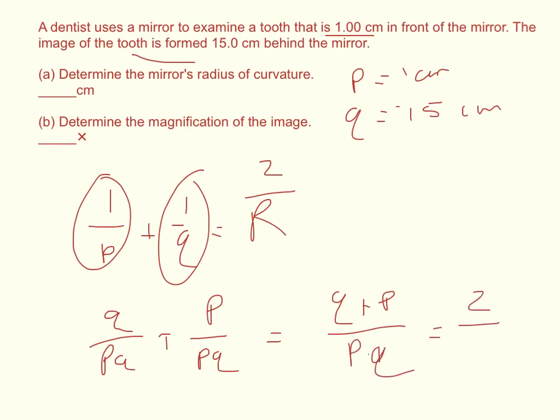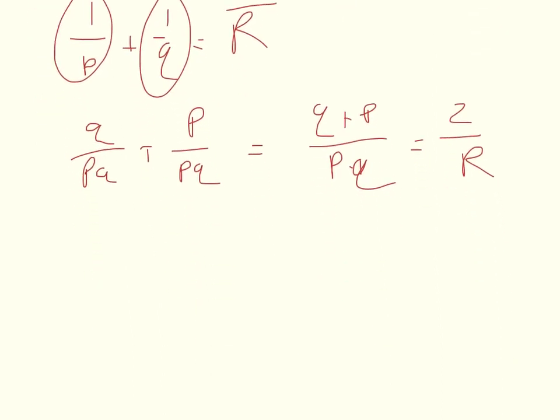And that's equal to 2 over R. I take the inverse of both sides. So I get P times Q over P plus Q equals R over 2. I multiply both sides by 2. So I get 2PQ over P plus Q equals R.